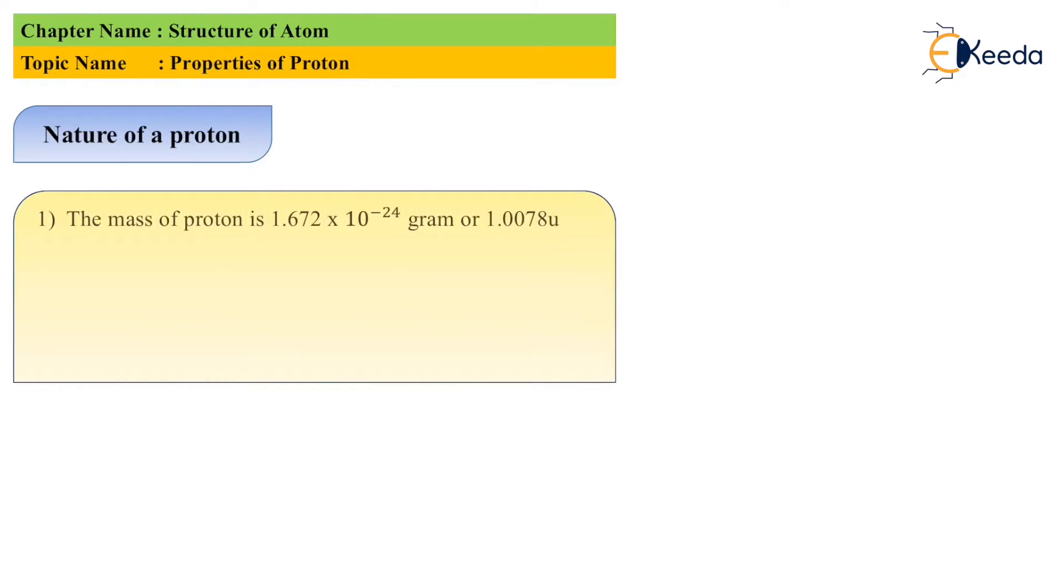The first point is the mass of the proton is 1.672 × 10^-24 grams, which is also called 1.0078 unified mass or atomic mass unit.